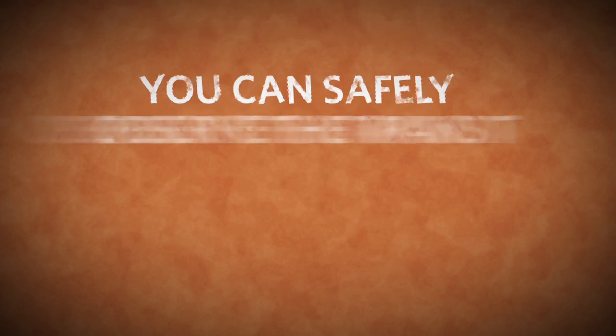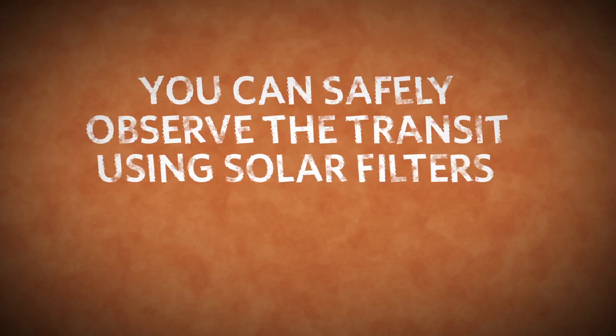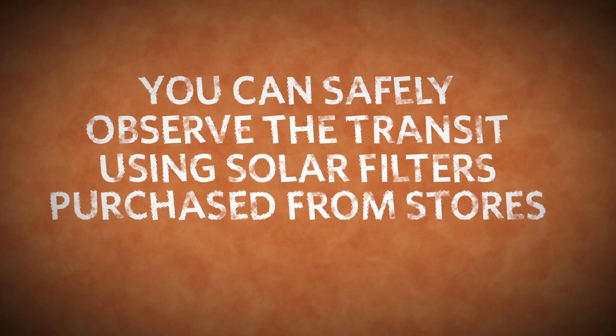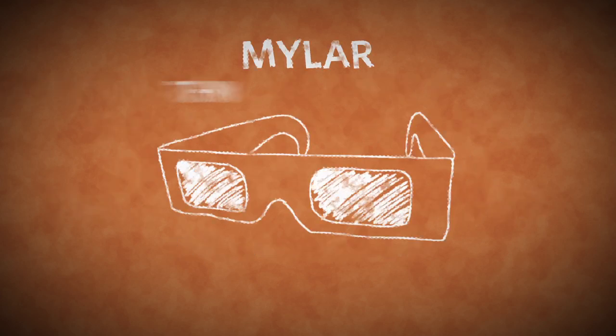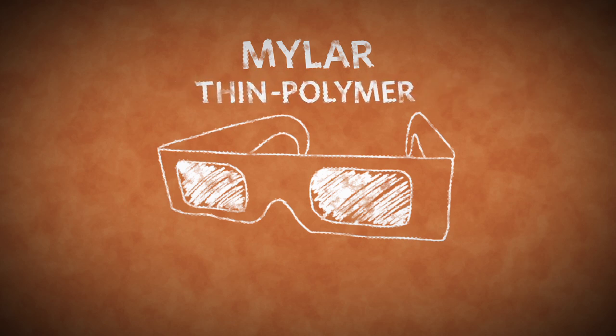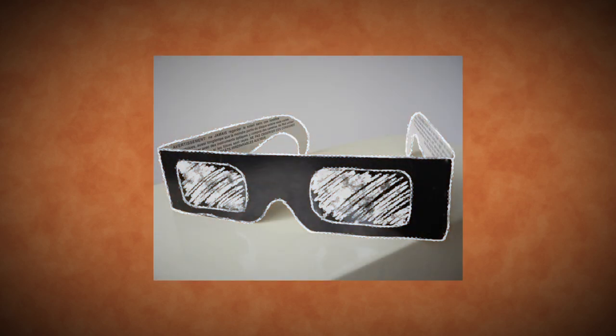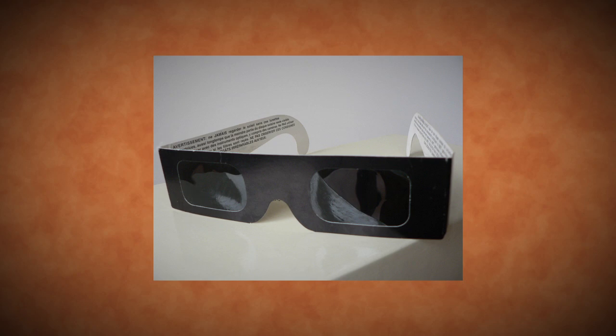You can safely observe the transit using safe solar filters that can be purchased from optical stores or museums. These include paper goggles or frames with mylar or thin polymer material designed for viewing the Sun. Make sure they're in good condition with no wrinkles or pinholes.